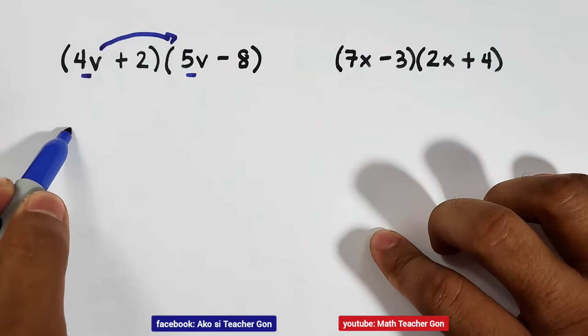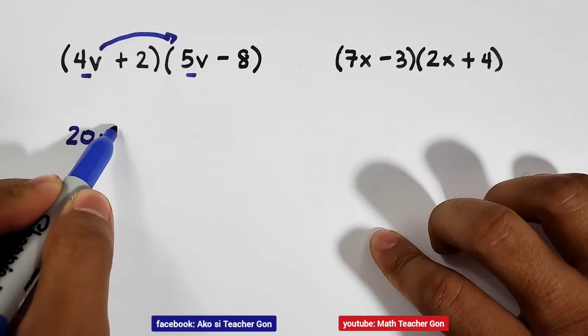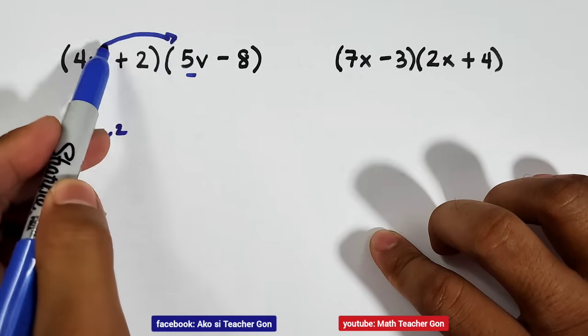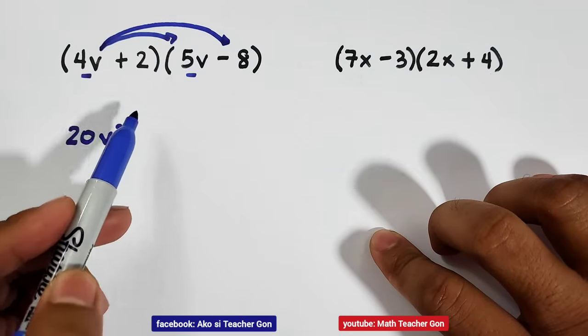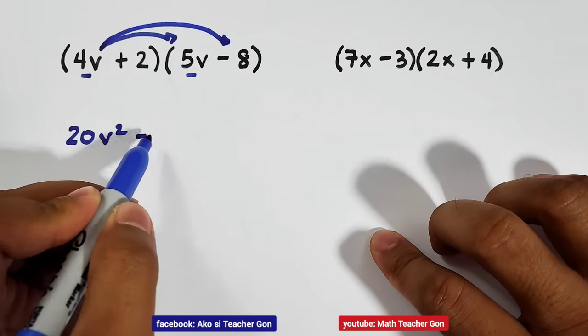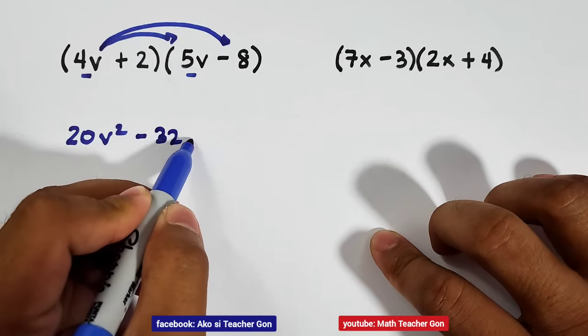So their product is 20v squared. Next, O, outer terms, 4v and negative 8. Let's multiply them. 4v times negative 8 is definitely negative 32v.